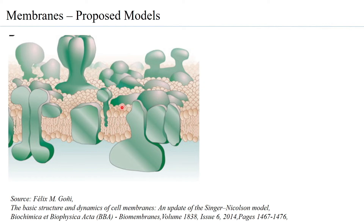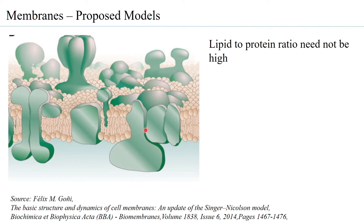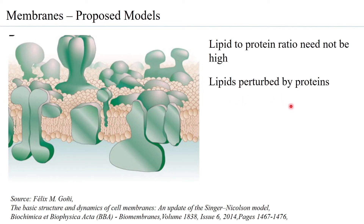Over the years, certain aspects of Singer-Nicholson's model have been modified. It has been understood that a high lipid-to-protein ratio is not necessary — there are many membranes with a higher protein concentration than lipids, so either ratio can be high. Lipids are in fact perturbed by proteins, contrary to what Singer-Nicholson suggested. The thickness of the membrane was also observed to be uneven — narrower at certain parts and broader at others, depending on how proteins are present in the bilipid layer.